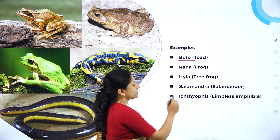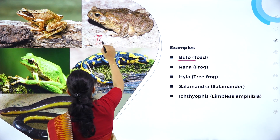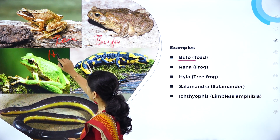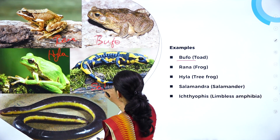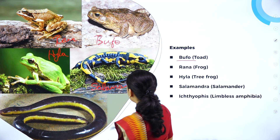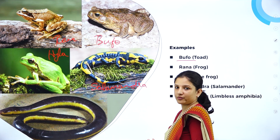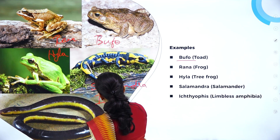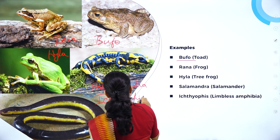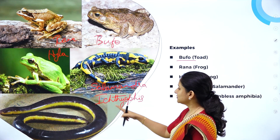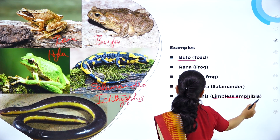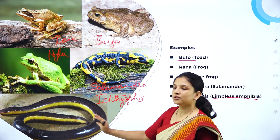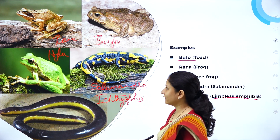Talking about some examples: there is Bufo, which is a larger frog also called a toad. Then we have Rana, which is the common frog found everywhere during the rainy season. Hyla is the tree frog. Salamandra almost looks like a lizard but is placed under class Amphibia because it shows most characteristics of amphibians — it also lives in water as well as on land. Finally, there is Ichthyophis, which is a limbless amphibian. All the other examples have limbs, but Ichthyophis has neither forelimbs nor hindlimbs — it looks like a snake or an earthworm but is classified as an amphibian.